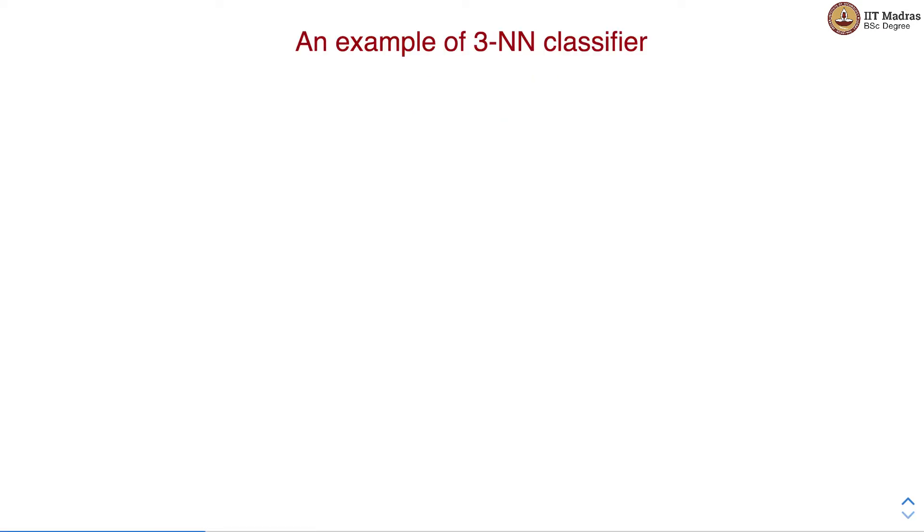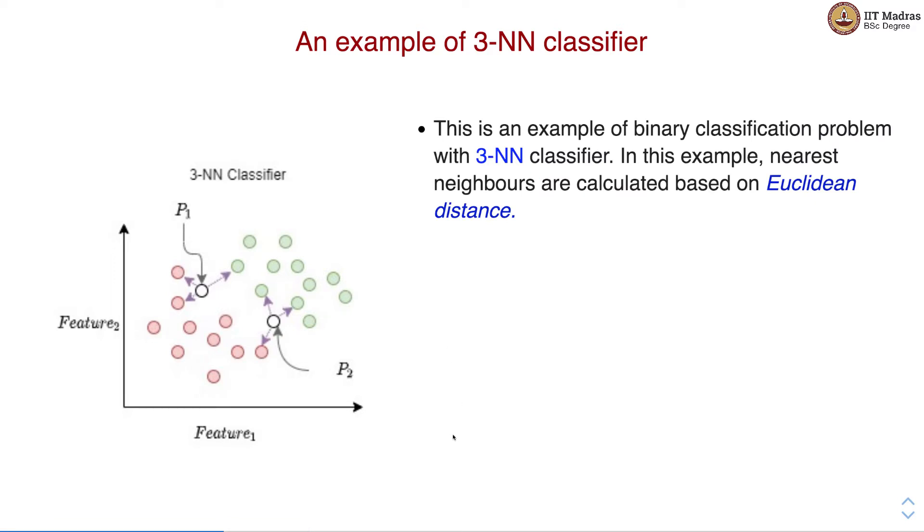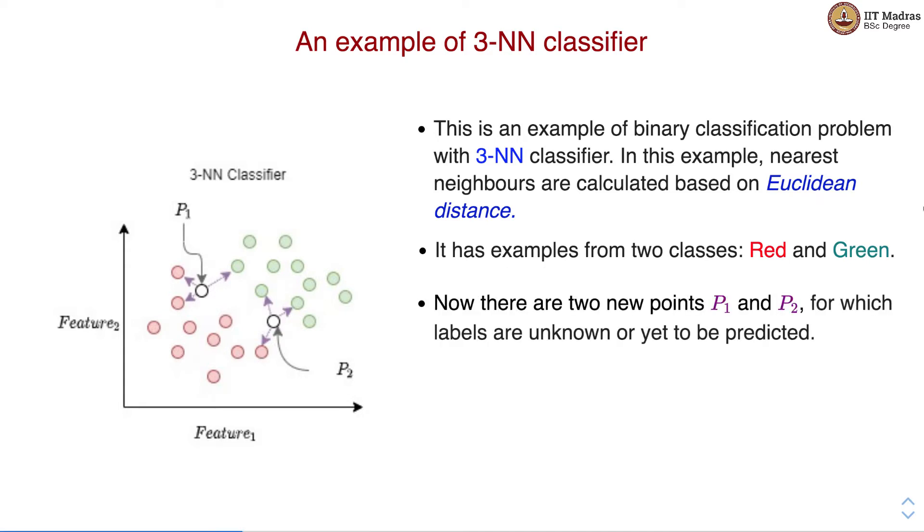Let's look at an example of three nearest neighbor classifier. This is the training data set with two features, feature 1 and feature 2. There are points from two classes red and green, and now we have two new examples p1 and p2 for which we need to assign the class labels. This is an example of a binary classification problem with 3-NN classifier, where 3-NN is nothing but KNN with K equal to 3. In this example the nearest neighbors are calculated based on Euclidean distance.